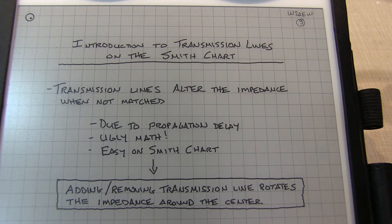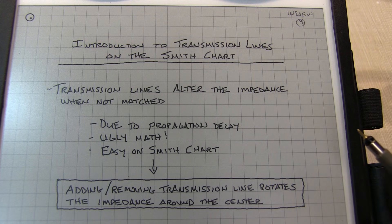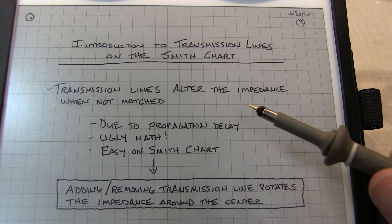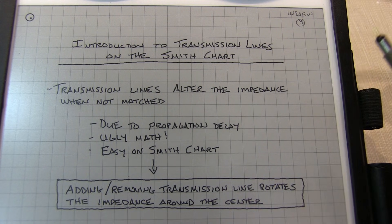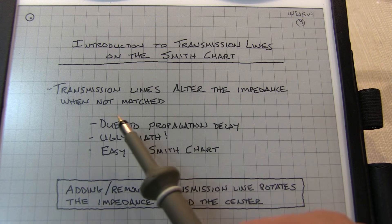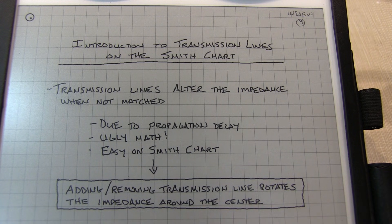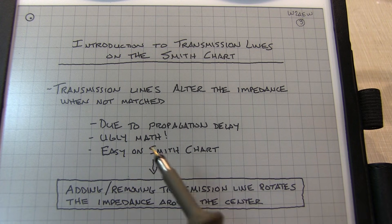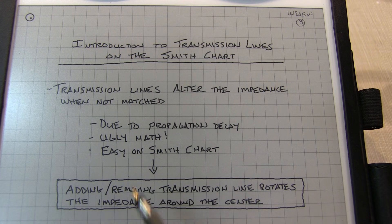When you connect a load to a source, like a transmitter to an antenna, with a transmission line, one of the things that happens is the transmission line will alter the impedance that's seen at the transmitter end if the load, such as the antenna, is not impedance matched to that transmission line. This is due to the propagation delay of the reflection that comes back at the transmitter side. There's a lot of really ugly math that describes that, but it's actually very easy to visualize on the Smith chart.